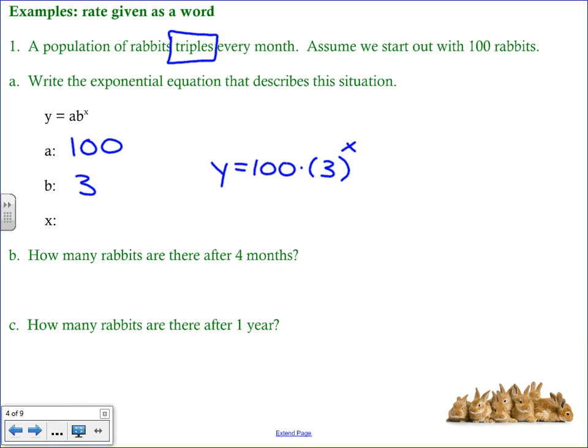So in part b it says how many rabbits are there after four months? Well the tripling period is every month. So if I'm looking for four months then clearly there have been four tripling periods. So all we need to do is replace x with four. So we rewrite our equation and then you would put this into your calculator. In fact you can press pause and do that and then check your answer. We find out that there were 8100 rabbits.